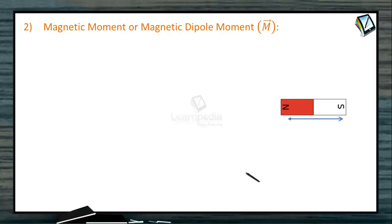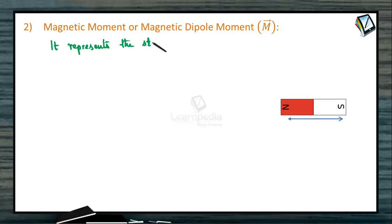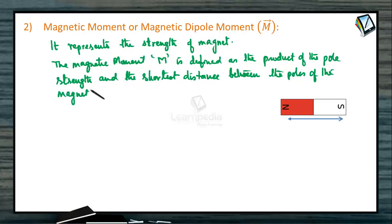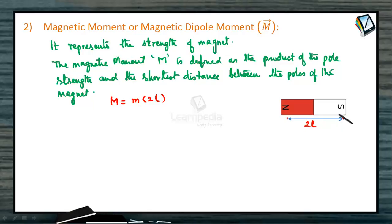Next we will study magnetic moment or dipole moment, capital M. The magnetic moment is defined as the product of pole strength and the shortest distance between the poles of a magnet — that is, the effective length. It represents the strength of the magnet. Capital M is equal to small m into 2l, where 2l is the effective length, the distance from north pole to south pole. m into 2l is called the magnetic moment.